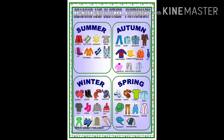Summer clothes are quite light, most probably light-colored, not black, because black absorbs heat more. Winter clothes are thicker to give proper heat to your body. We also have rainy-season clothes — right now we are experiencing monsoon, so we have rain coats and gumboots. So seasons, climate, and weather affect the clothes you wear.